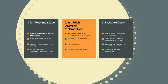For example, as we're going through and establishing the delivery methodology, we'll probably realise we've missed some scope and have to go back to step one. Whereas when we're estimating costs, we may realise we can save a lot of money by self-performing the works and go back and change our delivery methodology.